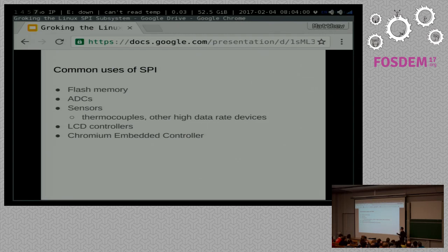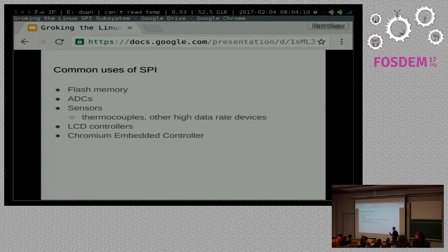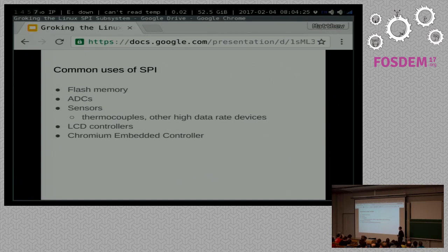A number of different sensors — thermocouples, for example. You might say that's just a temperature sensor, but in industrial use, things like thermocouples have to be sampled at very, very high rates of speed in process control that has very little deviation permitted in the temperature. LCD controllers — you start seeing a theme here. And as we saw this morning, the Chromium embedded controllers can use SPI as one of the communication channels.